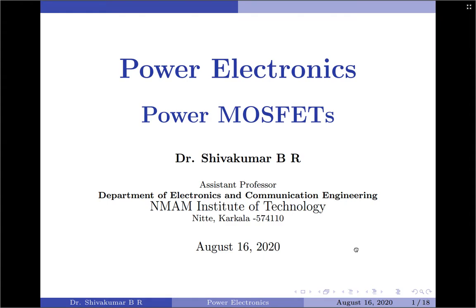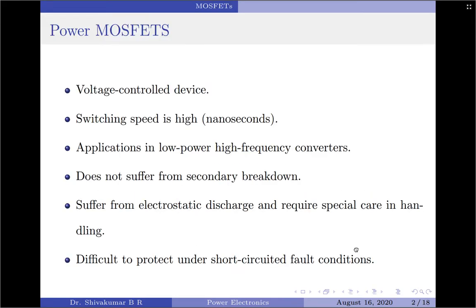In this session we will discuss power MOSFETs. A power MOSFET is a voltage control device and requires only a small input current. The switching speed is very high and the switching times are of the order of nanoseconds. Power MOSFETs are finding increasing applications in low power high-frequency converters. They do not have the problems of secondary breakdown phenomenon as BJTs do.